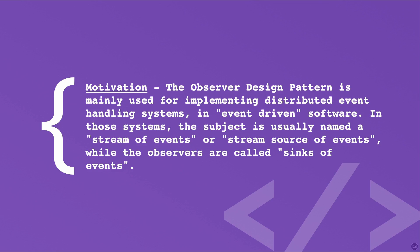The observer design pattern is mainly used for implementing distributed event handling systems in event-driven software. In those systems the subject is usually named a stream of events or stream source of events, while the observers are called sinks of events. A common side effect of partitioning a system into cooperating classes is the need to maintain consistency between related objects. You don't want to achieve consistency by making the classes tightly coupled because that reduces their reusability.